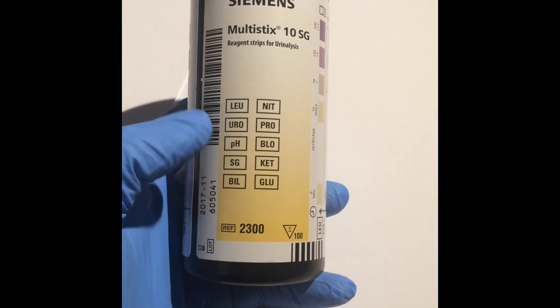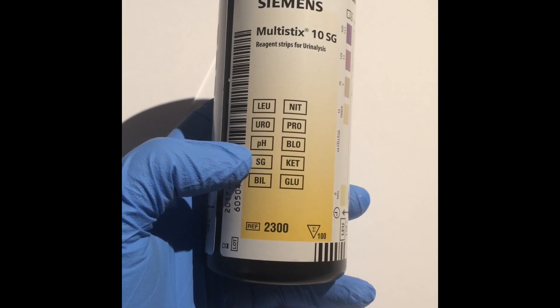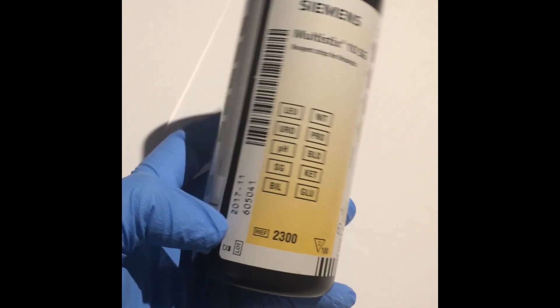Here are the parameters being measured: leukocytes, nitrites, urobilinogen, protein, pH, blood specific gravity, ketones, bilirubin, and glucose.